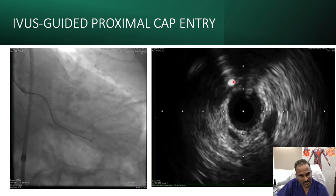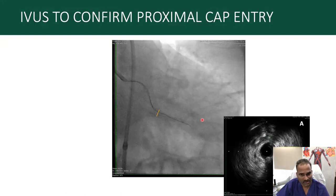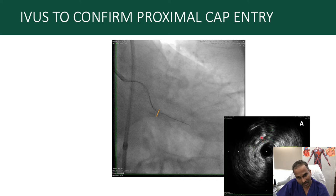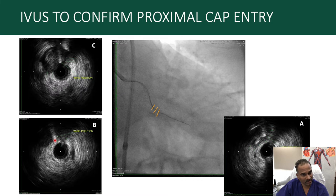We then performed IVUS to assess wire position. You can see the LCX and the OM from which we are performing IVUS. The bright spot is the wire — it is inside the media but not at the center of the intimal plaque. If it were at the center of the intimal block, we could confirm intimal entry. Since it is in the periphery, it is difficult to say whether it is intimal or subintimal — it appeared borderline.